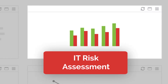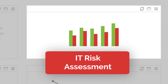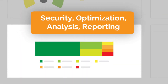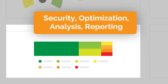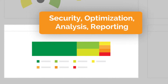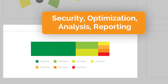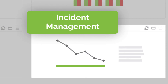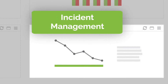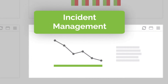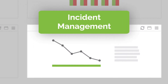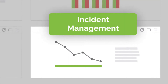Use frameworks like NIST and ISO for risk management. Consume and correlate data from scanners, internal systems, and threat feeds for analysis and reporting. Use configurable workflow to manage incidents from identification to remediation. Limit access and automate escalation paths.